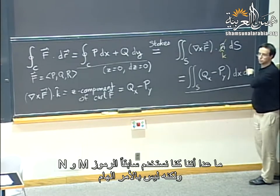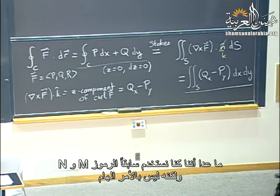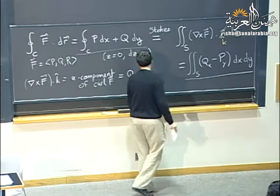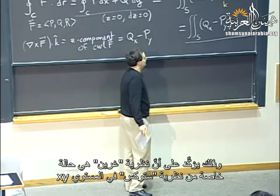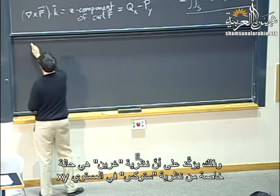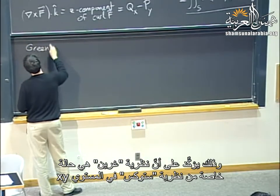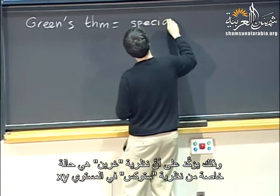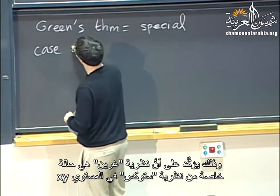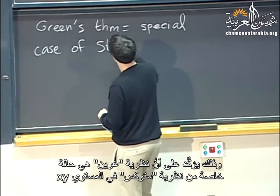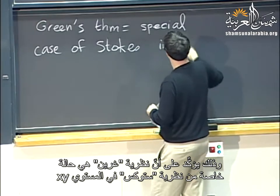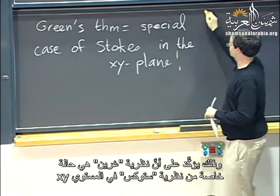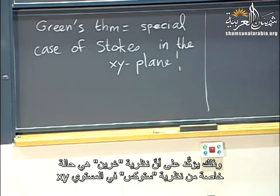So we get: the integral of p dx + q dy along a closed curve equals the double integral of (q_x − p_y) dx dy. That is exactly the statement of Green's theorem. This tells us that Green's theorem is just a special case of Stokes' theorem in the xy-plane.